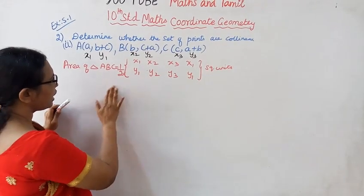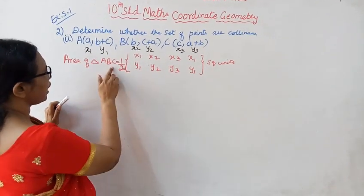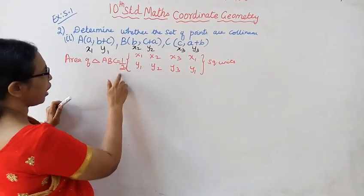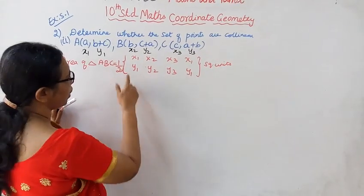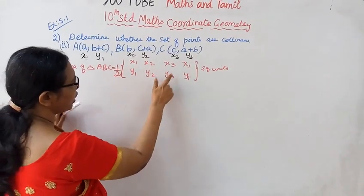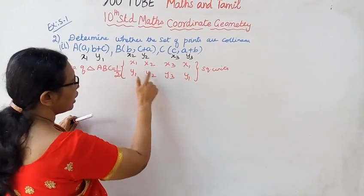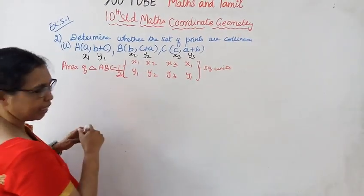We need to find the area of triangle ABC using the half into pictorial determinant method formula: X1, Y1, X2, Y2, X3, Y3, X1, Y1 — and it is downward minus upward.